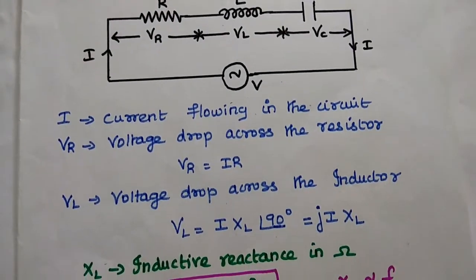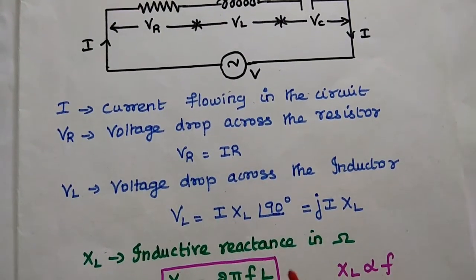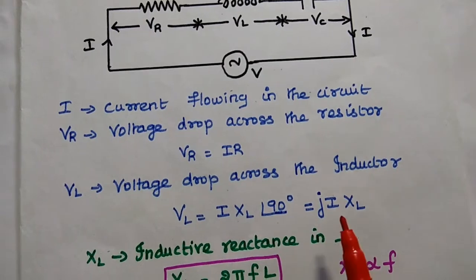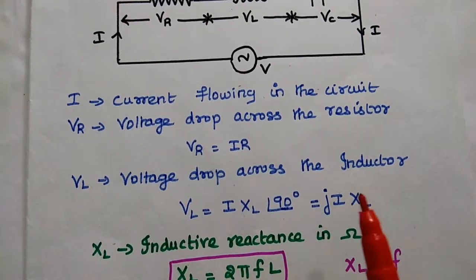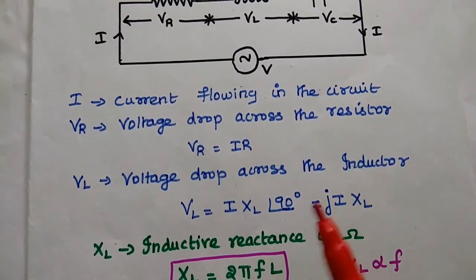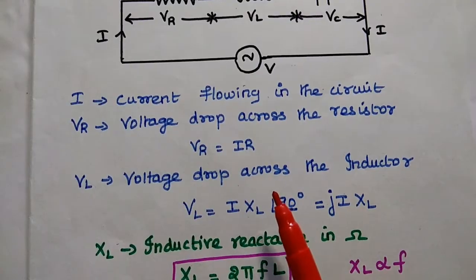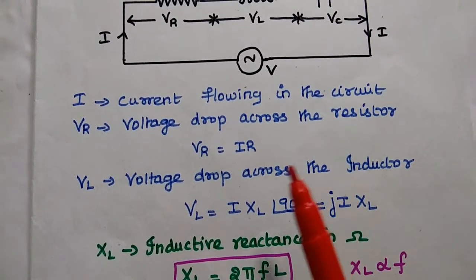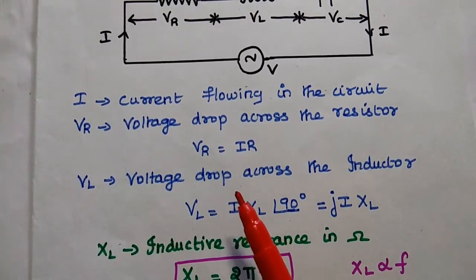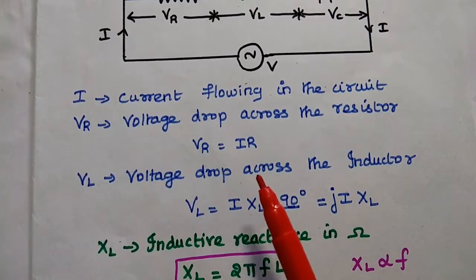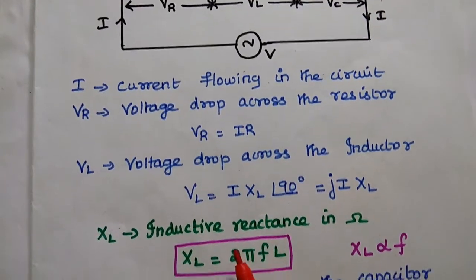I represents the current flowing in the circuit — the same current flows throughout the circuit. Vr is the voltage drop across the resistor. According to Ohm's law, Vr is equal to I into R.